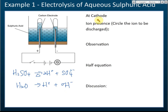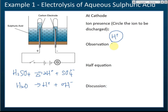First, they want us to list the ions present at the cathode. The cathode is the negative electrode. The ions present are hydrogen ions. There's only one type of positive ion here, because both dissociations produce hydrogen ions, so hydrogen ions are selected to be discharged.